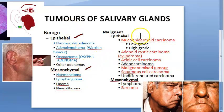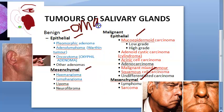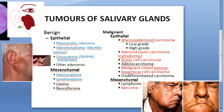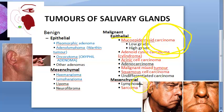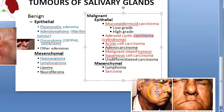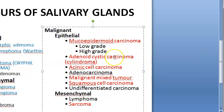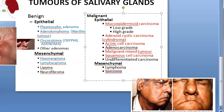Benign can be of epithelial origin or mesenchymal origin; malignant also can be epithelial or mesenchymal origin. Benign tumors usually will have '-oma' at the end — adenoma, lymphoma, hemangioma. When it comes to malignant: if it is epithelial origin it will be carcinoma, if it is mesenchymal it will be sarcoma. So carcinoma is epithelial malignant, sarcoma is mesenchymal malignant.